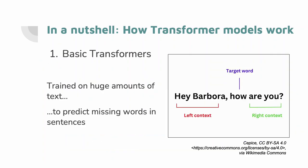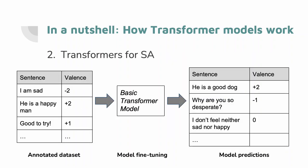Basic transformer models are generally trained on huge amounts of text to predict missing words in a sentence, as shown in the example here. They can be used to generate new text, like ChatGPT, but they also embed a deep general knowledge of how human language works. As a consequence, transformer models can be adapted to perform sentiment analysis.